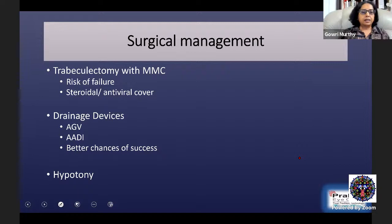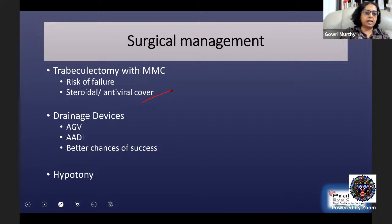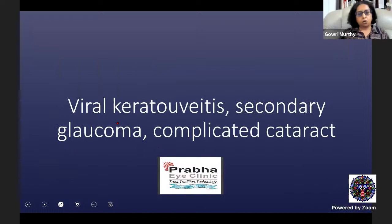Surgical management of uveitic glaucomas can be by trabeculectomy with mitomycin C. There is an increased risk of failure compared to primary glaucomas, but it can give good IOP control with appropriate antiviral and steroid cover. The tendency has been to use drainage devices like the AGV or the Baerveldt, as they carry a better chance of success. With Baerveldt (non-valved), the chance of hypotony is higher in uveitic glaucoma, so the Ahmed glaucoma valve is generally the more preferred implant for uveitic glaucoma.